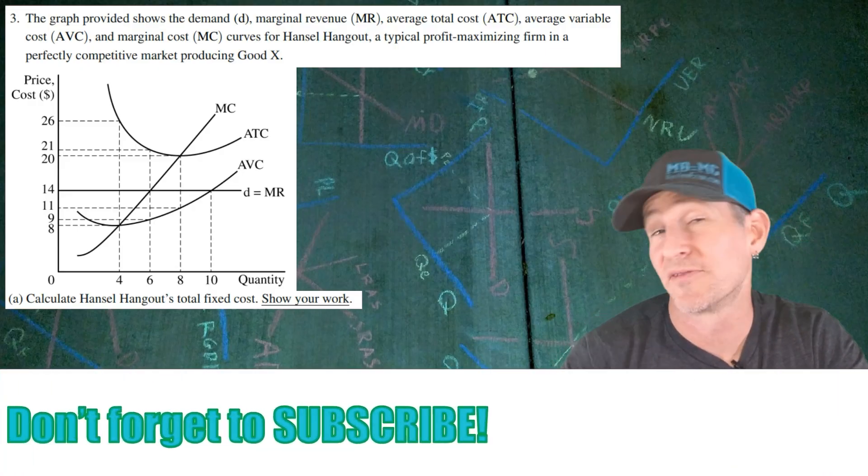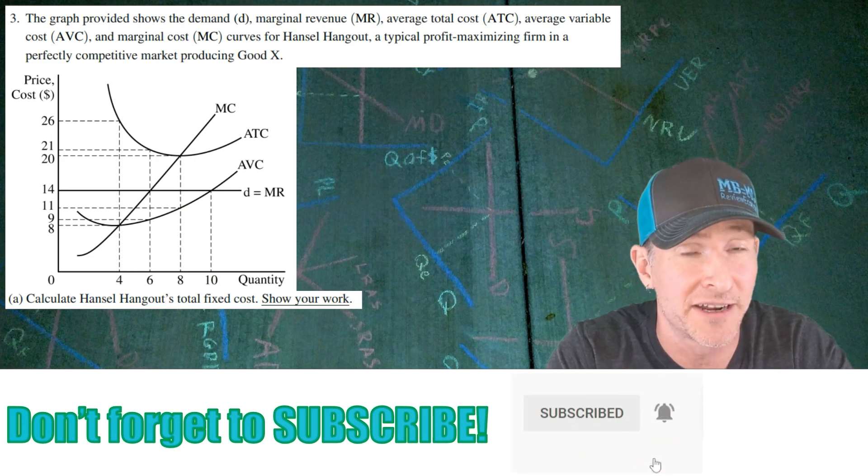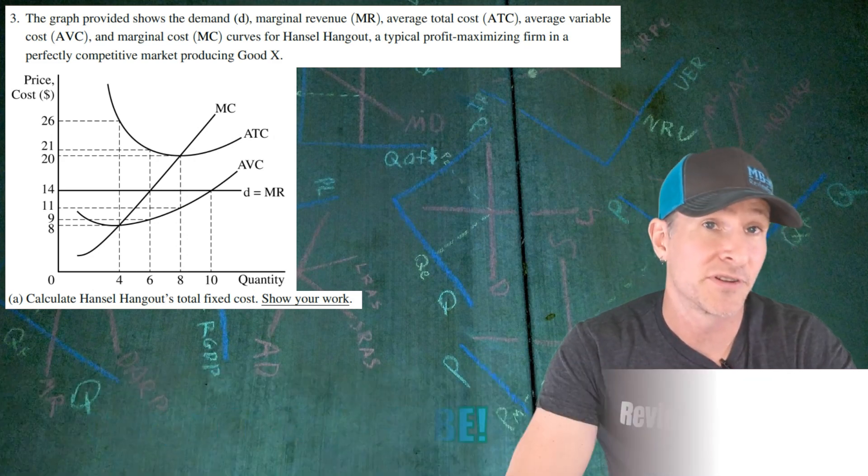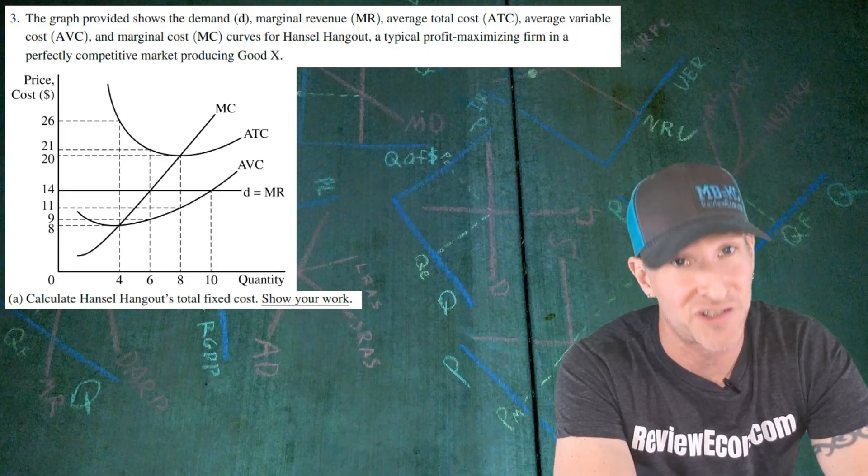This question provides us with the graph and we're going to analyze it. This is a profit-maximizing, perfectly competitive firm called Hansel Hangout, and they produce good X. First, we are asked to calculate the total fixed cost of Hansel Hangout and show our work.